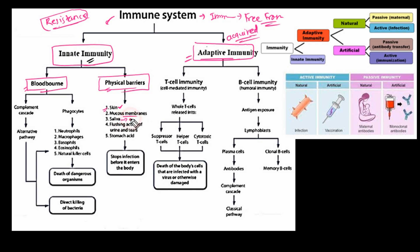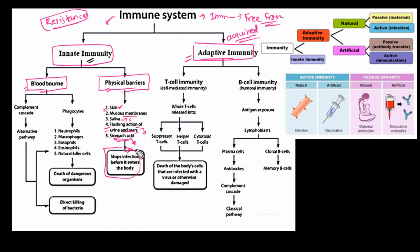Saliva also helps by washing out microorganisms and digesting any harmful proteins. Similarly, we have the flushing action of urine and tears, which flush out any foreign objects if they enter the respective areas. Then we have stomach acid, which damages antigens or microbes due to its very high acidity. In this way, these physical barriers stop infection before it enters the body.